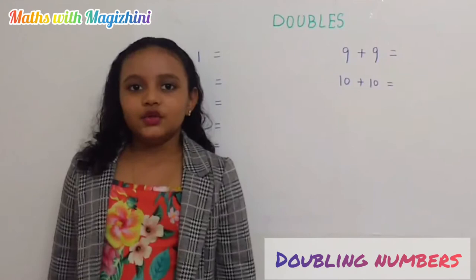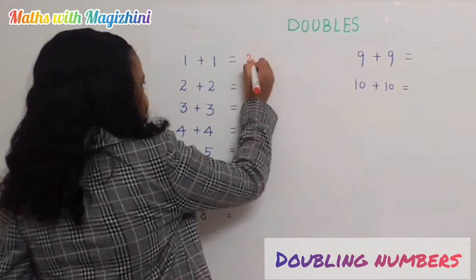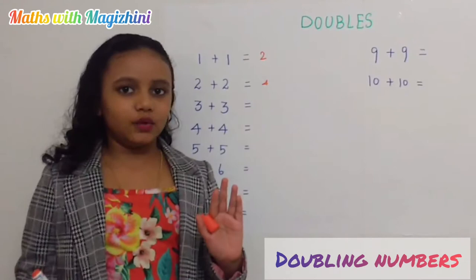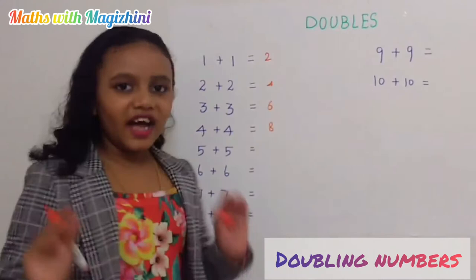Let's see the first problem. 1 plus 1 equals 2. 2 plus 2 equals 4. 3 plus 3 equals 6. 4 plus 4 equals 8. 5 plus 5 equals 10.